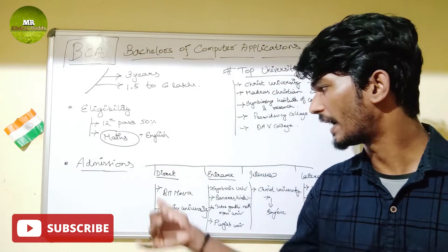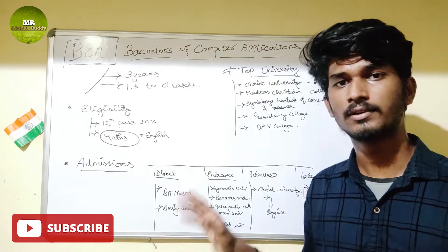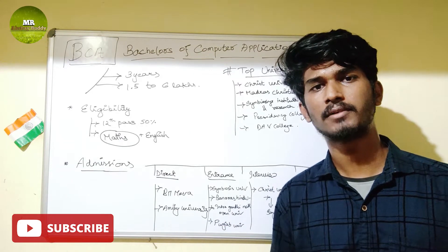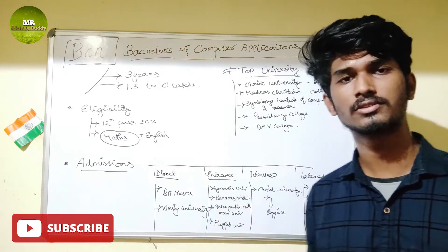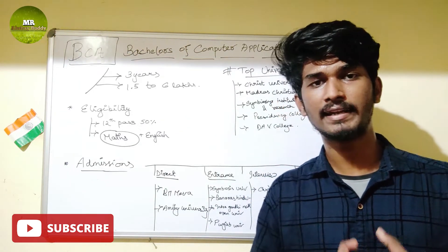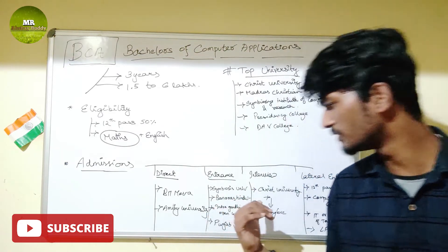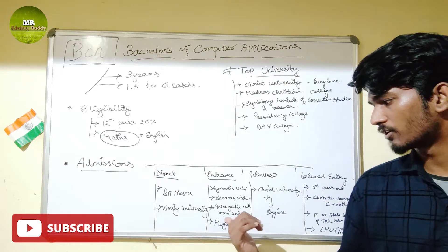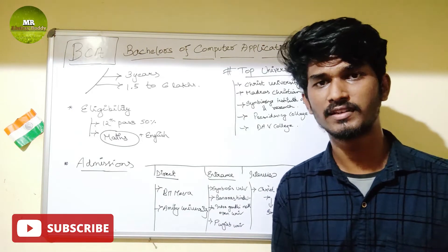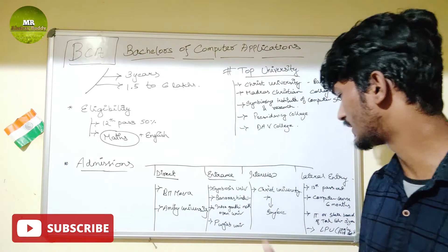Admission procedures include: Direct admission, Entrance-based, Interview, and Lateral entry. For direct admission, colleges like BITS and Amity University admit based on your 12th percentage. For entrance-based admission, colleges like Symbiosis University require you to clear an entrance exam. Lateral entry allows you to join BCA directly in the second year.